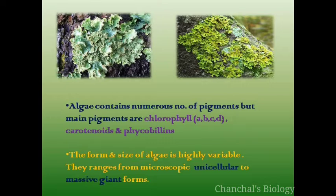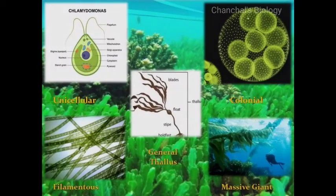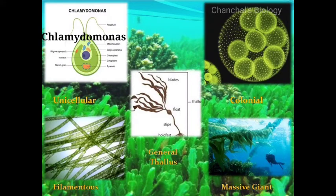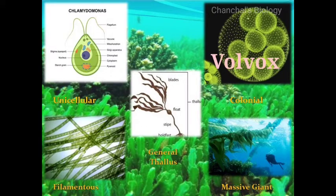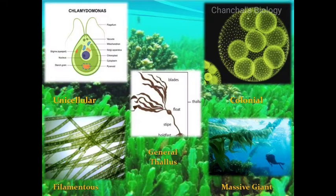The form and size of algae is highly variable. They range from microscopic unicellular to massive giant forms, as we can see in these pictures. The first one is Chlamydomonas, which is unicellular. Next is Volvox in colonial form. Next is Spirogyra which is in filamentous form. And the last one is Kelps, which can reach a size of up to 100 meters.